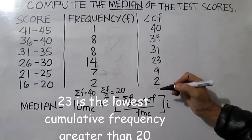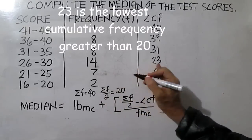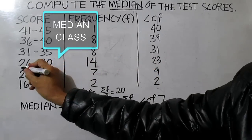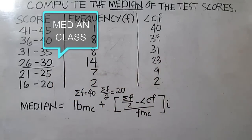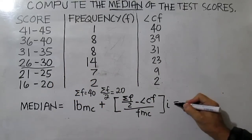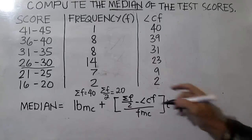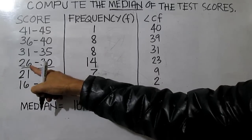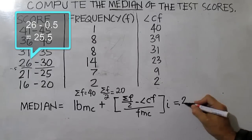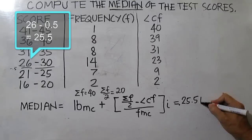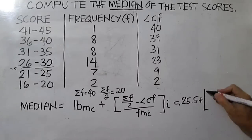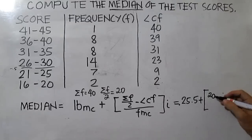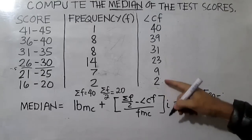What is the median class? The median class is 26 to 30. Now we can use the formula. The lower boundary of the median class — since this is our median class — the lower boundary is 25.5. Just subtract 0.5 from the lower limit of the median class. One-half of the total frequency is 20.